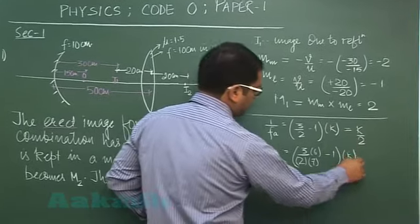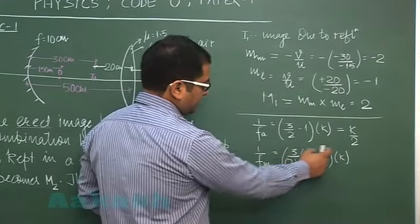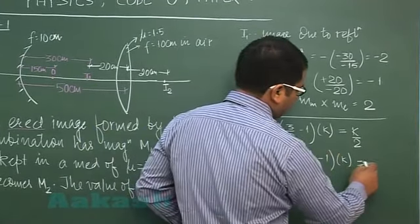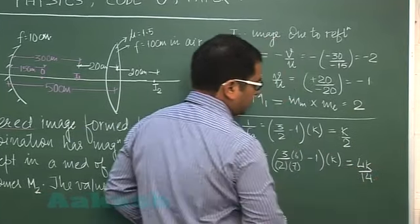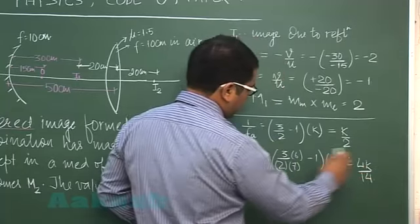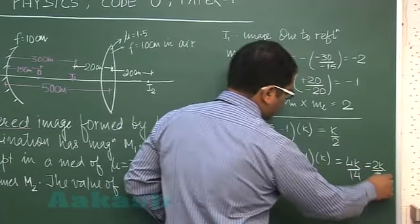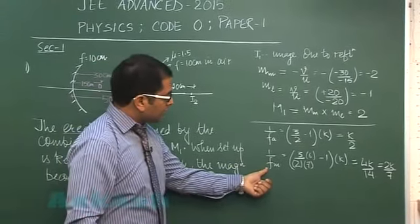Let's see the value: that's (18-14)/14, so that would be 4k/14, which clearly is 2k/7.